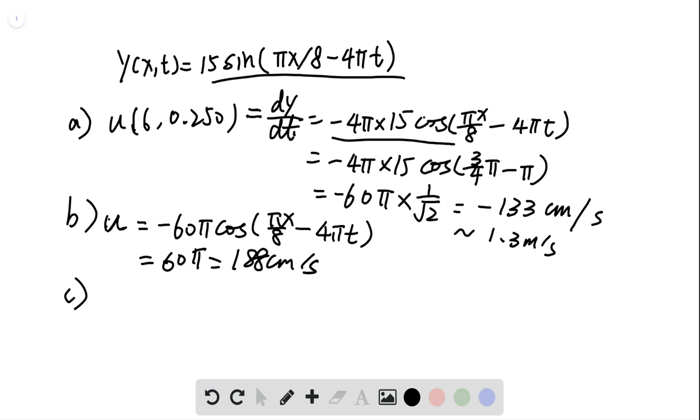So we have part c. Part c asks us, what is magnitude of the transverse acceleration for the point at, for this point. So in order to find the acceleration, we want to now again take the derivative of the speed, of the velocity. So acceleration at 60.25 is du dt. And we already know what u is. And we want to take another derivative.